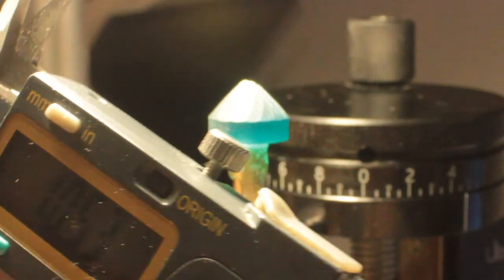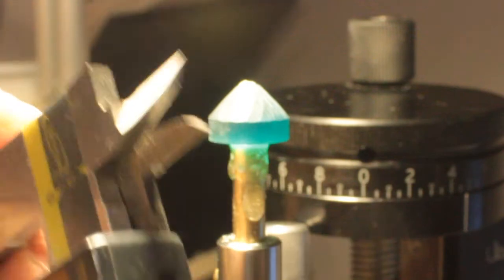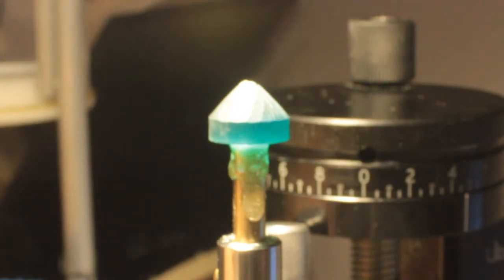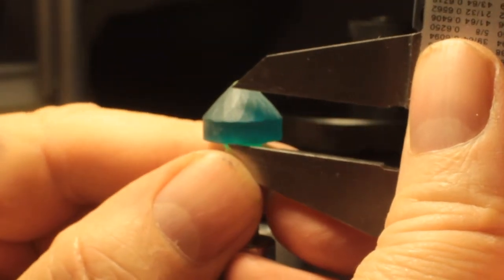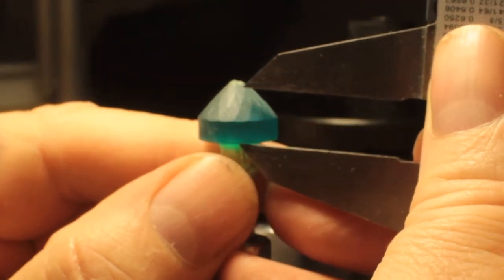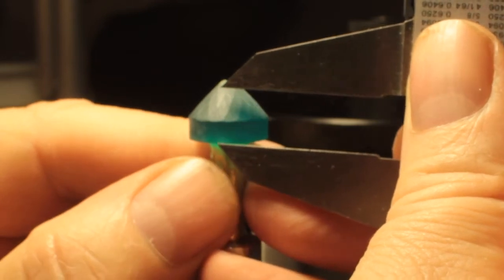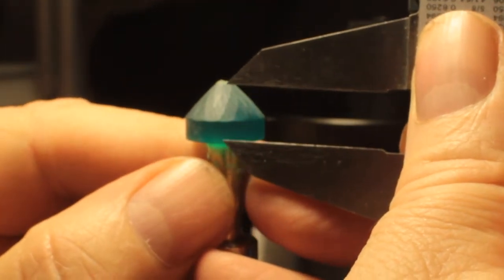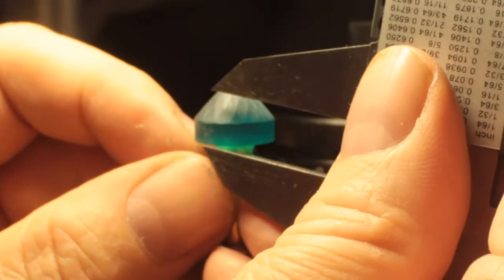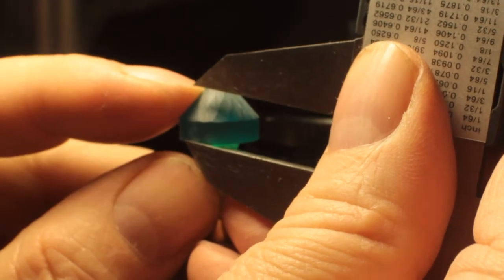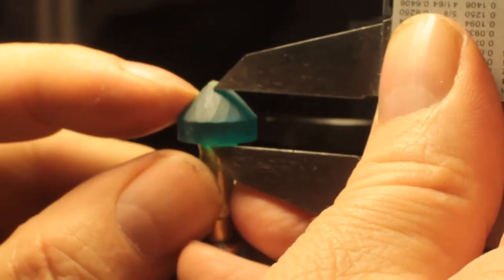So if I set my measure at 10.5 millimeters, then I just want to find out if I have enough space to cut the stone. And I do. So there is enough space to cut the stone with the pavilion, the crown, and the girdle and have a little bit of wiggle room right there. So I'm fine.